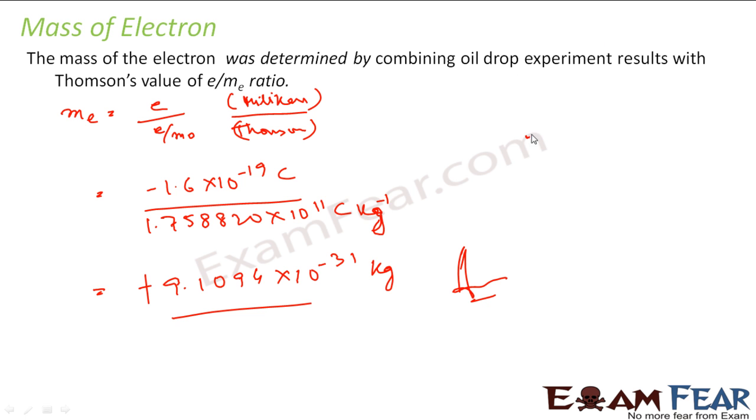So now we know something called electron. We know the charge of this and we know the mass of this. This is what we know, but we still don't know what is the structure of atom.